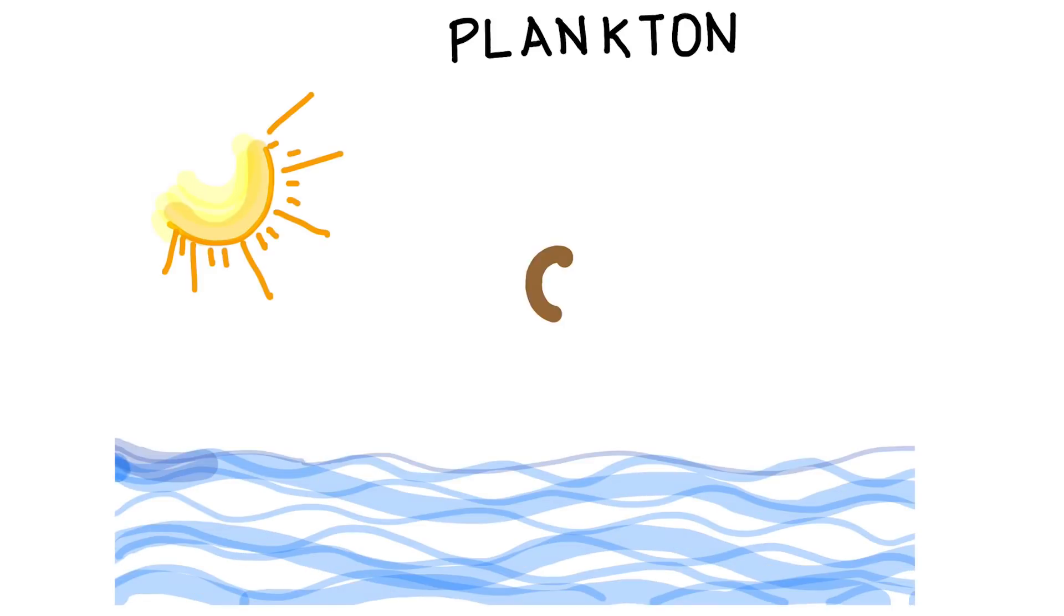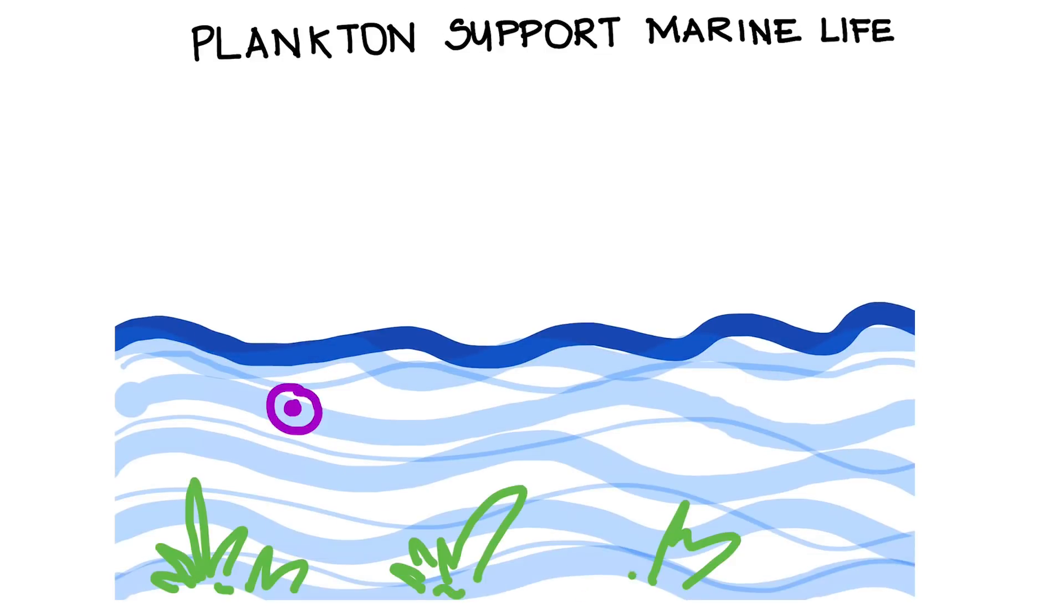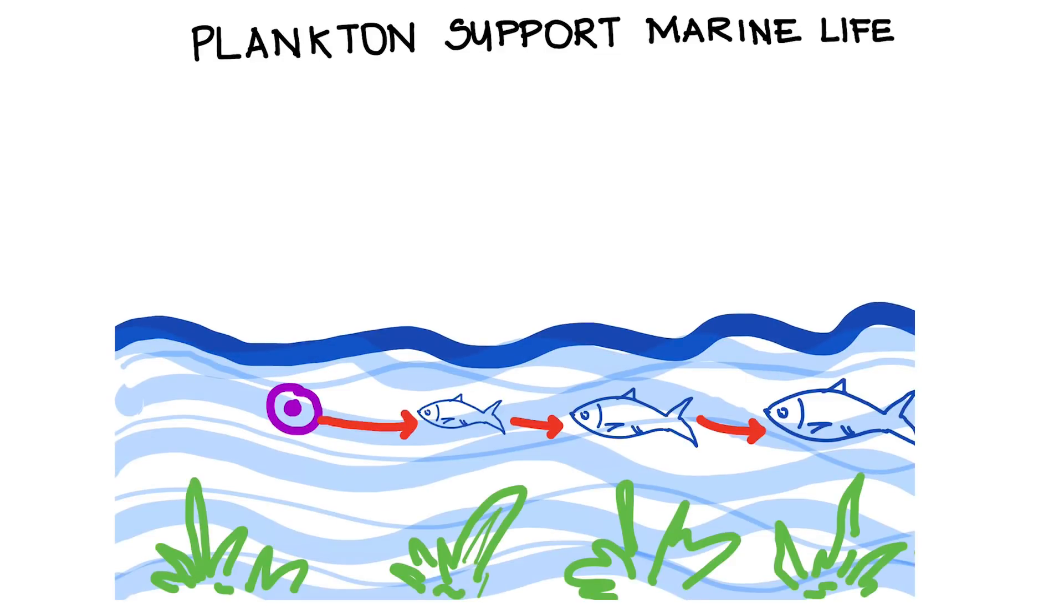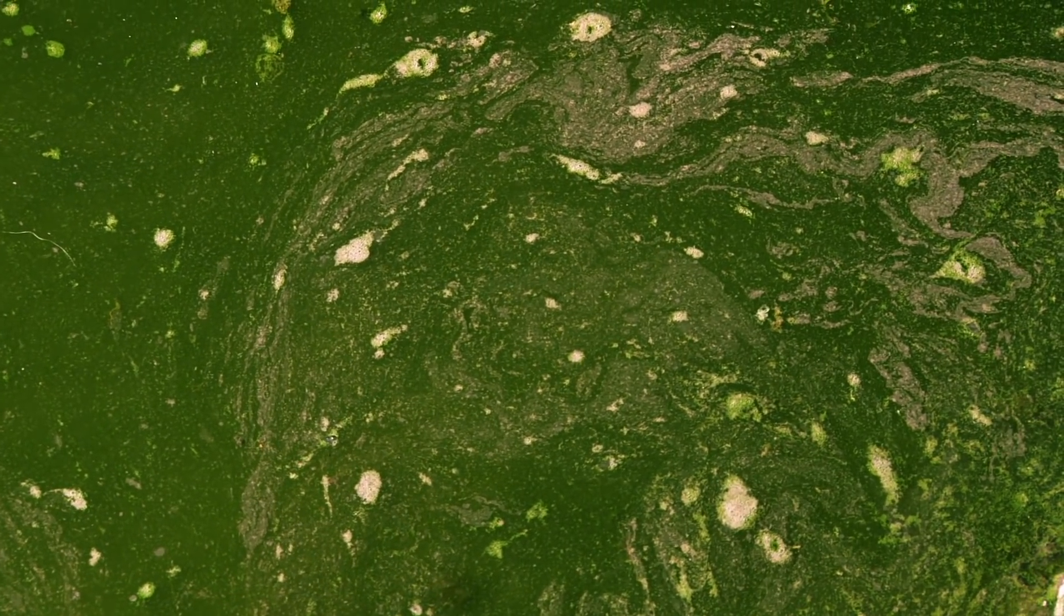Plankton are photosynthetic, microscopic, single-celled organisms that absorb the sun's energy and carbon dioxide. They are consumed by small fish, which are then eaten by larger fish, and which are finally eaten by the dominant species. When the number of plankton decreases, then the other fish in the food chain begin to starve.